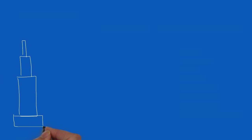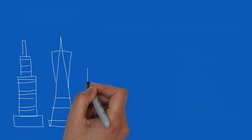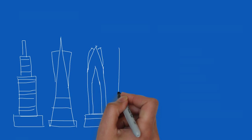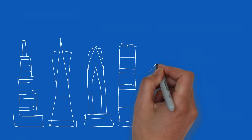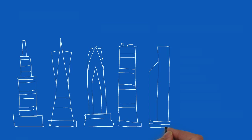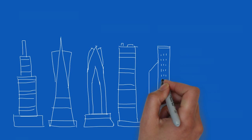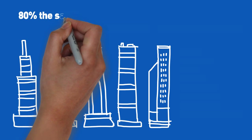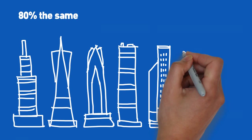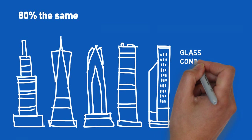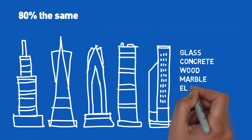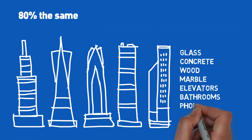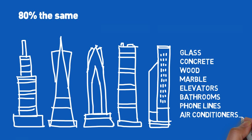Here's an easy way to think about it. Think of your application as a skyscraper. We all know there are hundreds of different types of skyscrapers, and we know that every skyscraper built contains at least eighty percent of the same stuff. They all have in common glass, concrete, wood, marble, elevators, bathrooms, phone lines, air conditioners — the list goes on and on.